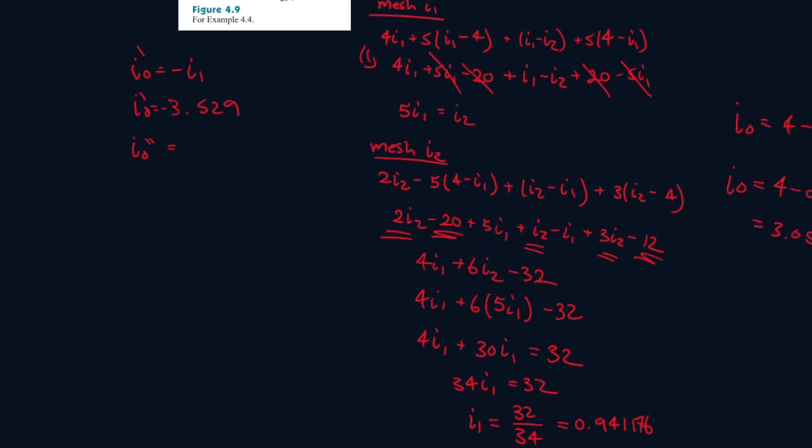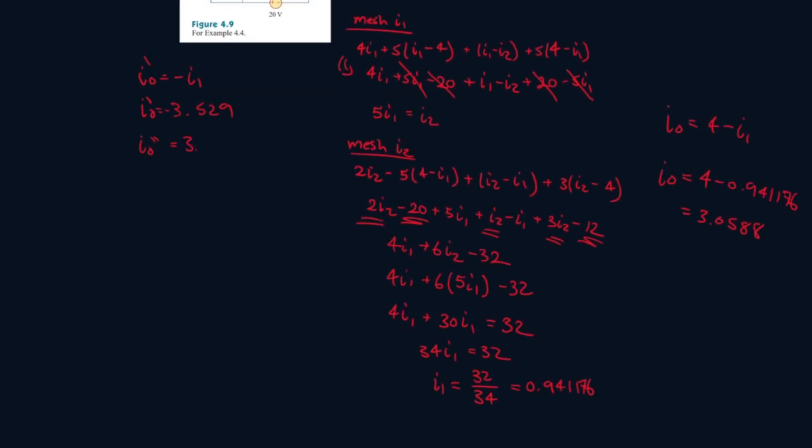So I0 double prime, that's equal to 3.0588. Now we can solve for our actual I0. So I0 prime plus I0 double prime. So it's minus 3.529 plus 3.0588. And we get minus 0.4702 amps. This is our final answer.